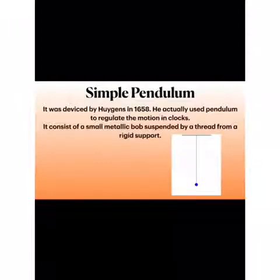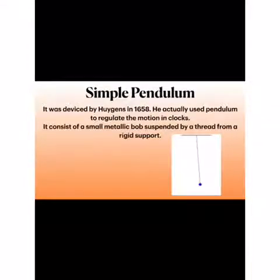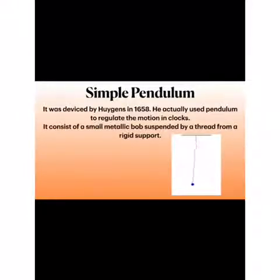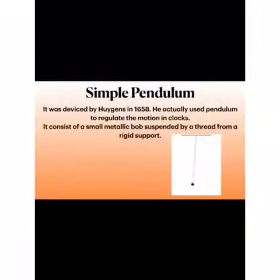The simple pendulum was devised by Huygens in 1658. He used the pendulum to regulate the movement in clocks. It consists of a small metallic bob, shown here in blue, suspended by a thread from a rigid support. It moves to and fro after a fixed interval of time, and this phenomenon was used to make the pendulum clock.